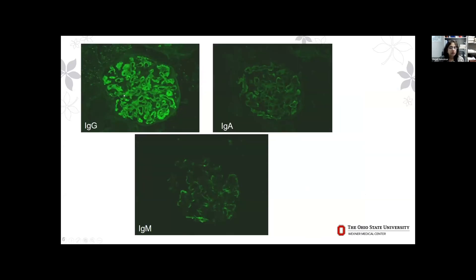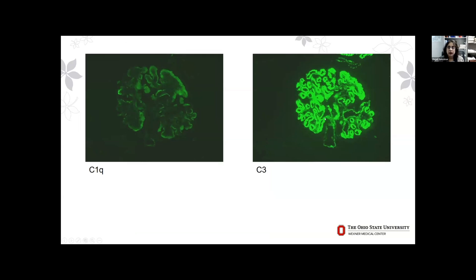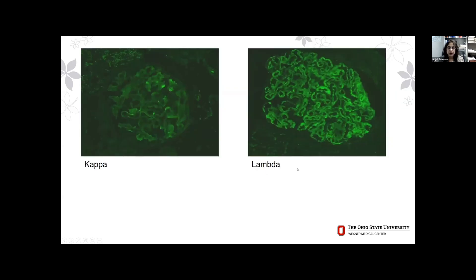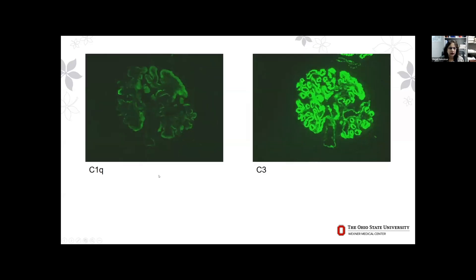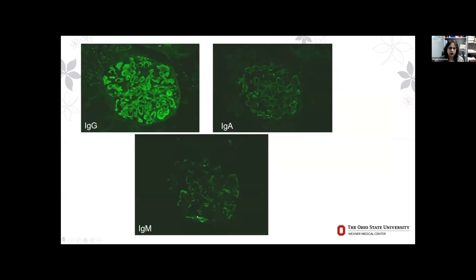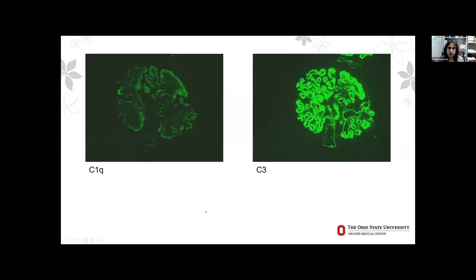On immunofluorescence, there was clearly IgG staining along the capillary loops and mesangium. IgM, although not totally negative, showed only a touch of very segmental granular staining. C1Q was similarly very mild. But C3 was absolutely prominent — three-plus diffuse mesangial and capillary wall staining. So mainly IgG and C3. Kappa and lambda showed lambda predominance; kappa was not totally negative, but the predominant pattern was IgG, C3, and lambda.